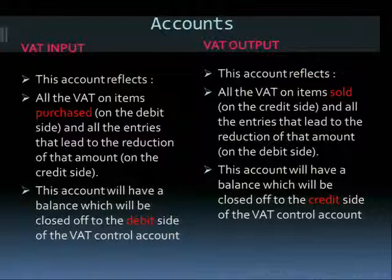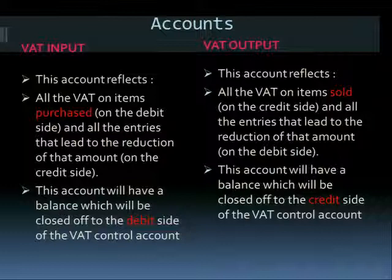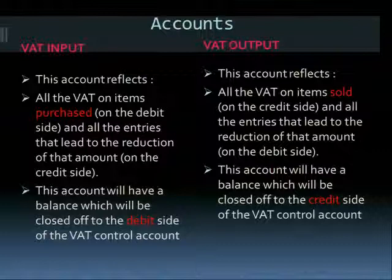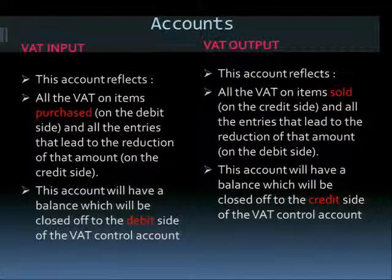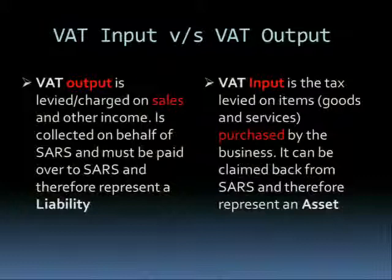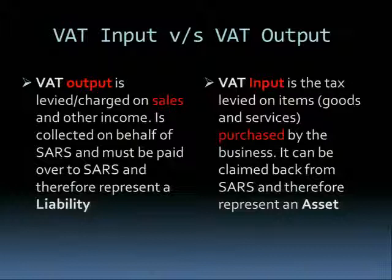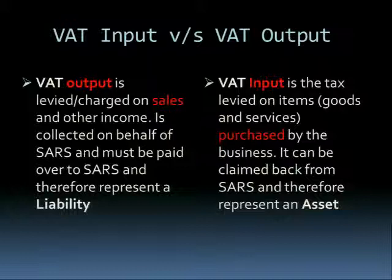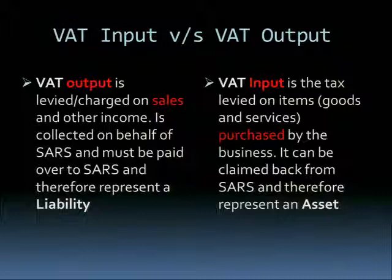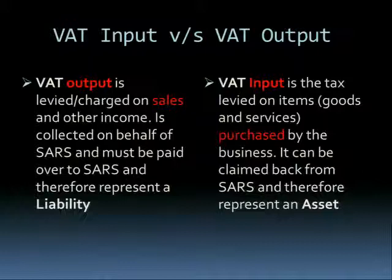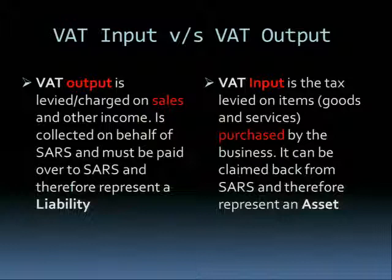VAT output is levied and charged on sales and other income. It is collected on behalf of SARS and must be paid over to SARS — therefore it represents a liability. But VAT input is the tax levied on goods and services purchased by the business. It can be claimed back from SARS — therefore it represents an asset, because that money comes back to your bank, and your bank is obviously an asset.